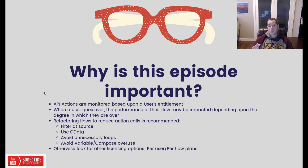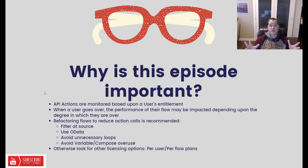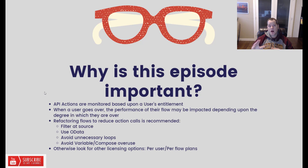If you've refactored your flows and taken these recommendations into account, the other option is additional licensing. This could be bumping up to a per user plan, especially if you're on an Office 365 plan, or moving to a per flow plan, which will give you more runway as well.